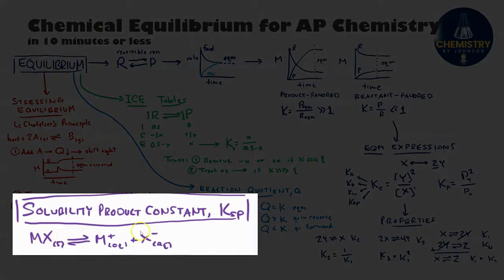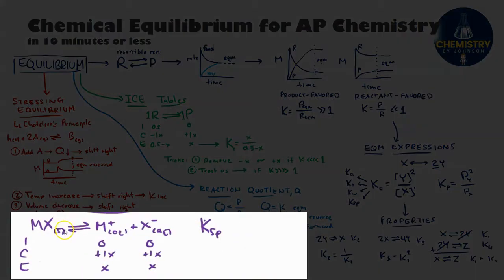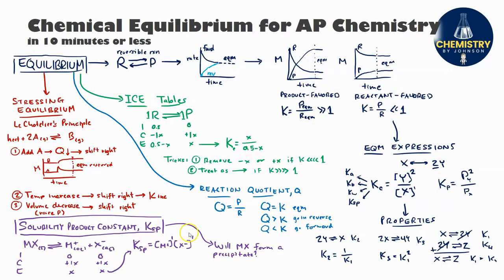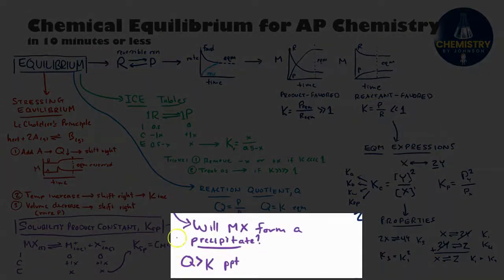For a sample salt MX, the reaction equation would show the solid dissolving into its ions, and the K value is called Ksp. Ksp is often used as an indicator of solubility — the larger the Ksp, the more products there are and the more soluble the salt. Remember that Ksp is a K like any other, so you can use ICE tables, write K expressions, solve for Q, or apply Le Chatelier's principle just as with other reactions. You can also use Ksp to decide if a salt will form as a precipitate: if Q is greater than Ksp, a precipitate will form; if Q is less than Ksp, there aren't enough ions and no precipitate forms.